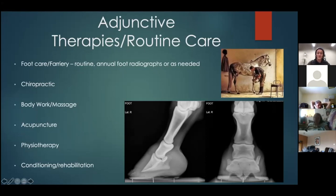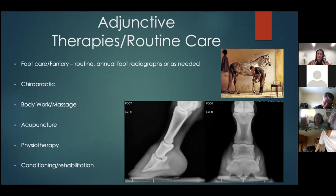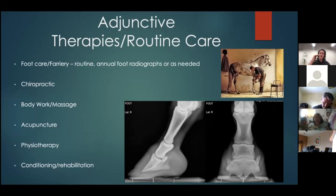Acupuncture may provide some assistance, primarily through relieving compensations from other problem areas. Physiotherapy offers many different modalities and a skilled set of hands that can support your vet — physiotherapists may find things that vets don't pick up on, and assessing the horse in different ways helps everyone work together toward recovery or injury prevention. Keeping horses from becoming totally deconditioned is also important, as that's usually when accidents happen.